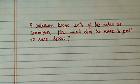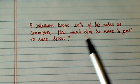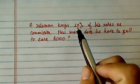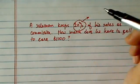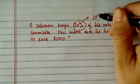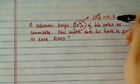Hi there. Thank you for watching this clip on solving a word problem. A salesman keeps 20%. First of all, 20%, you can't use the 20 as a number. 20%, you've got to convert into decimal first.